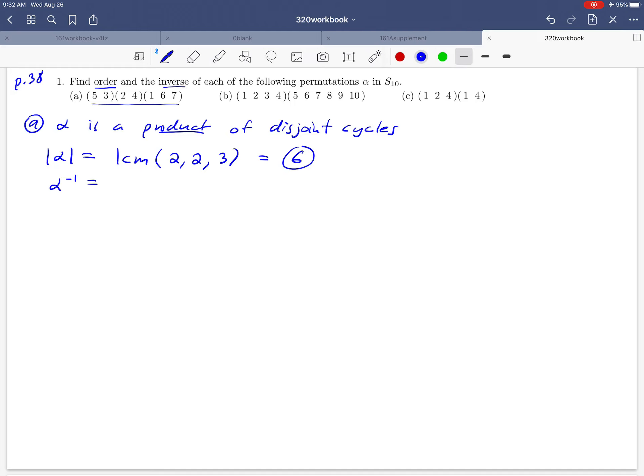You can always find the inverse of a permutation by just reversing the order of the elements in your cycle. So for example we start with a cycle that looks like (5, 3). We're just going to flip that.